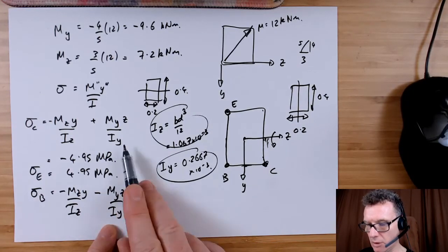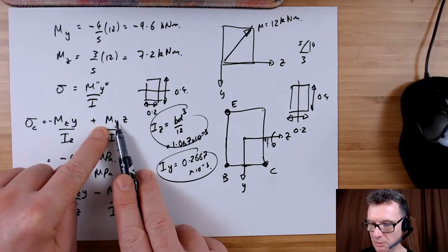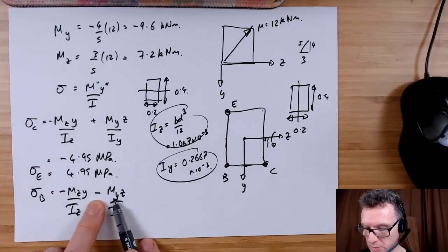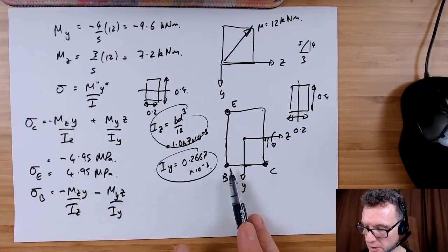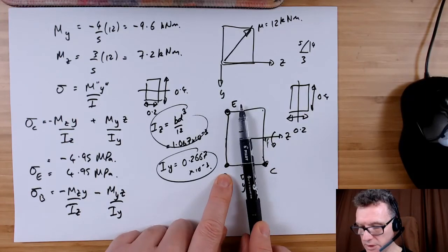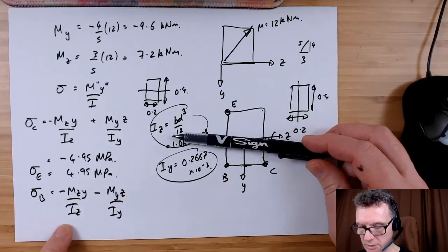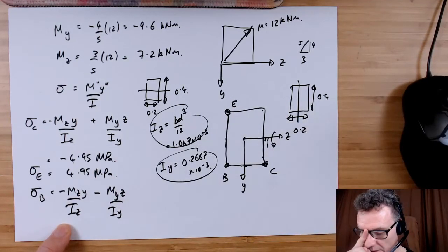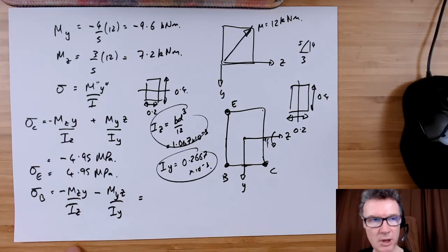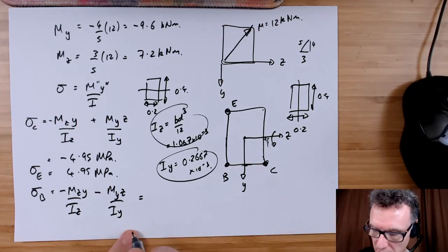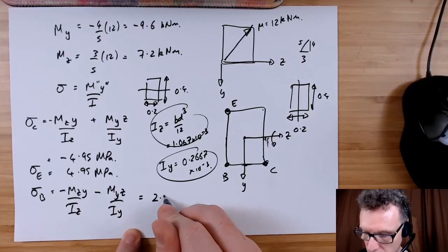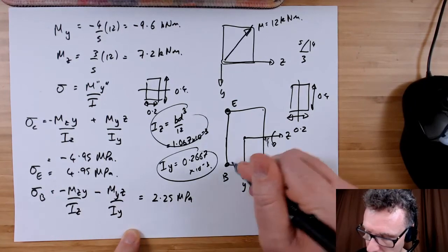This bit of turning is causing it to become negative stress, and you'll find I've worked out previously that we end up with overall a positive stress of 2.25 megapascals.